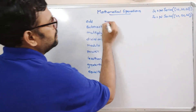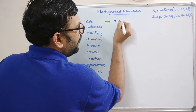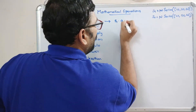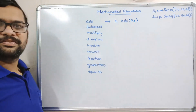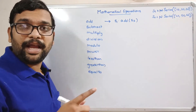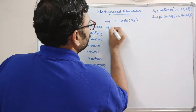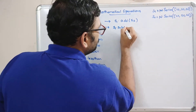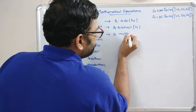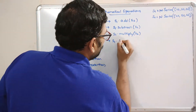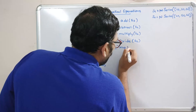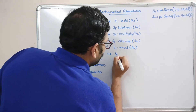For addition we can use s1.add(s2) — the elements will be added and a new Series will be created; s1 and s2 will not be impacted. Similarly, for subtraction: s1.subtract(s2), for multiplication: s1.multiply(s2), for division: s1.divide(s2), for modulo: s1.mod(s2), and for power: s1.power(s2).